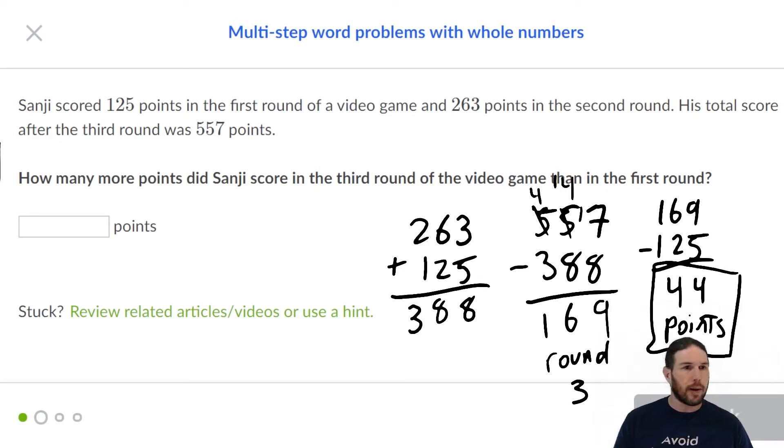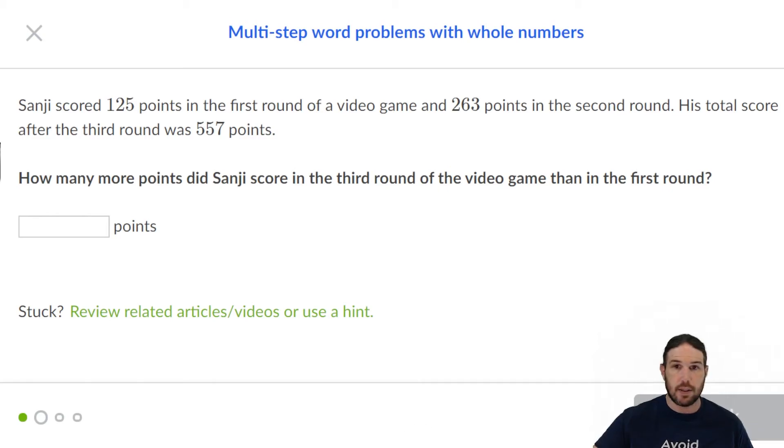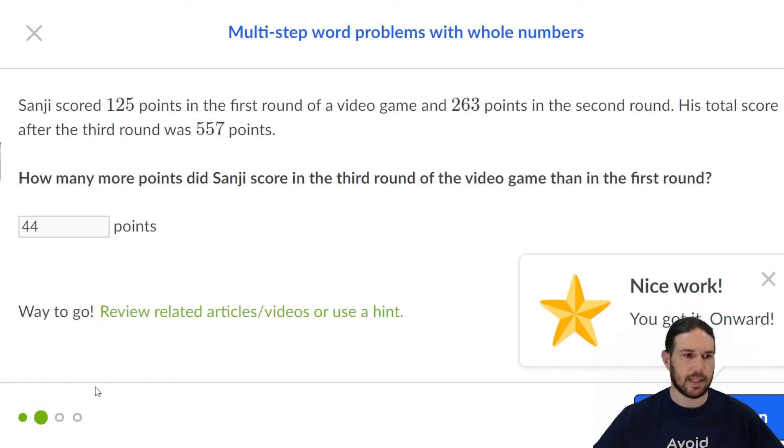So 44 points, assuming I did all of this right, is how many more points Sanji scored in the third round than the first round. Let's see if I actually did all that right. Excellent. Moving on.